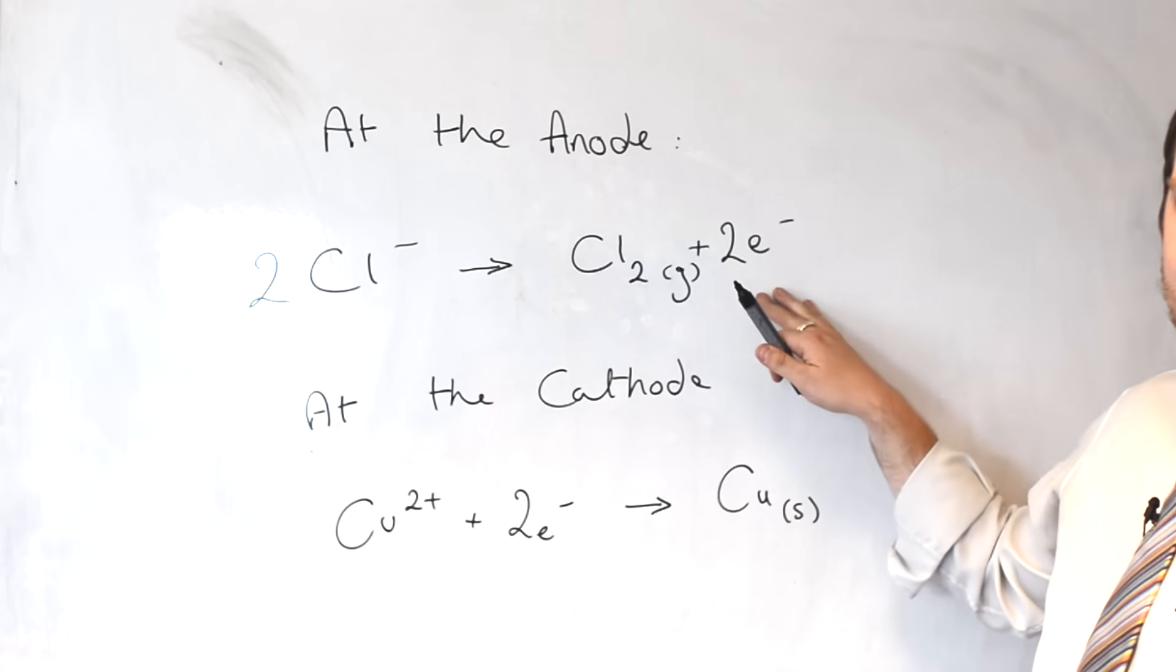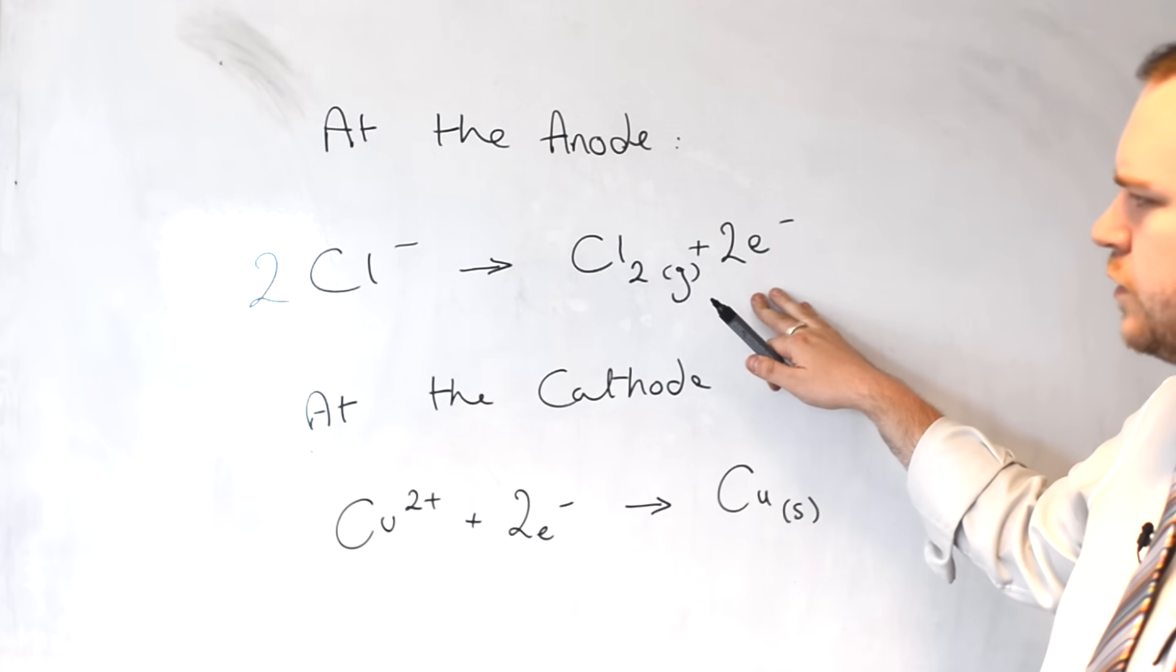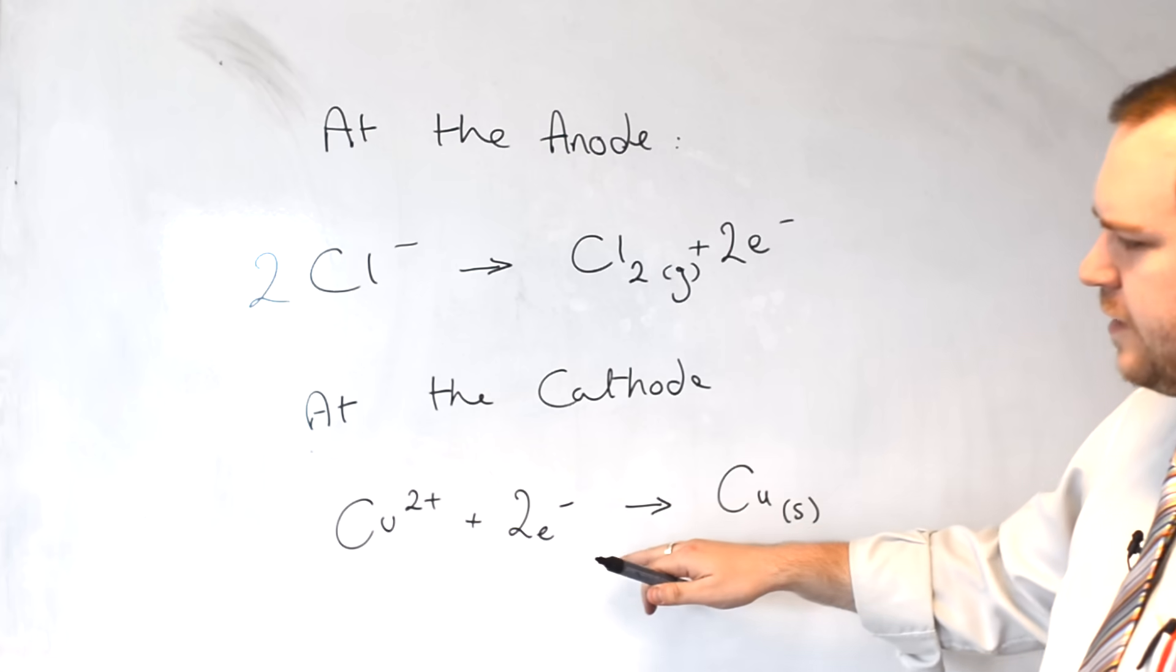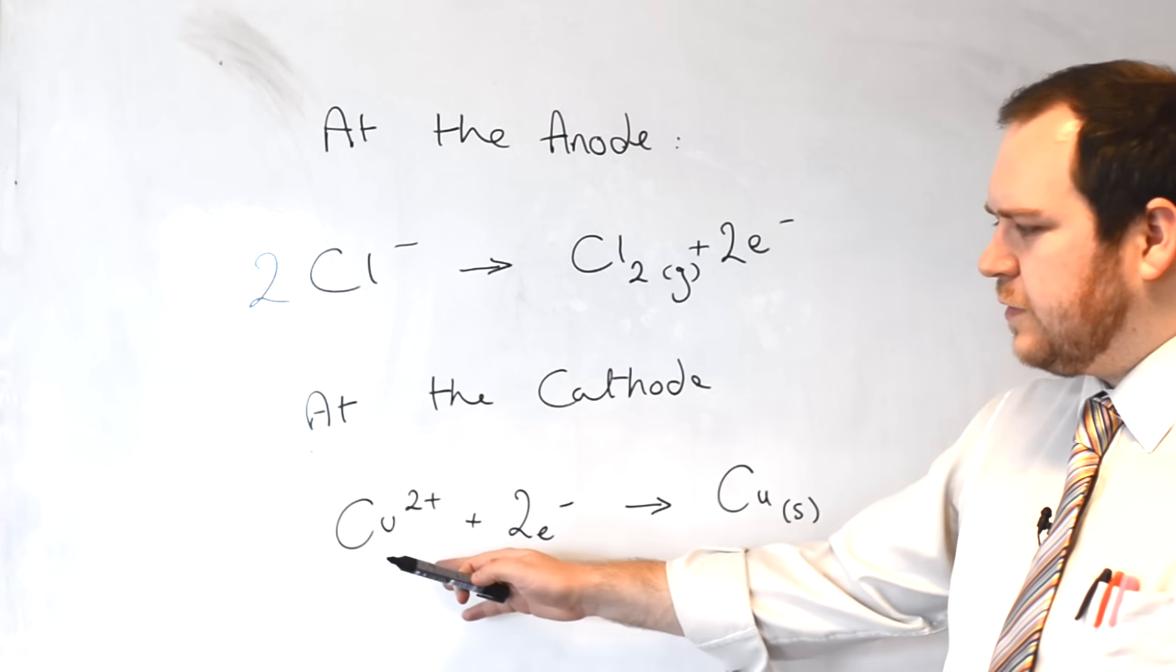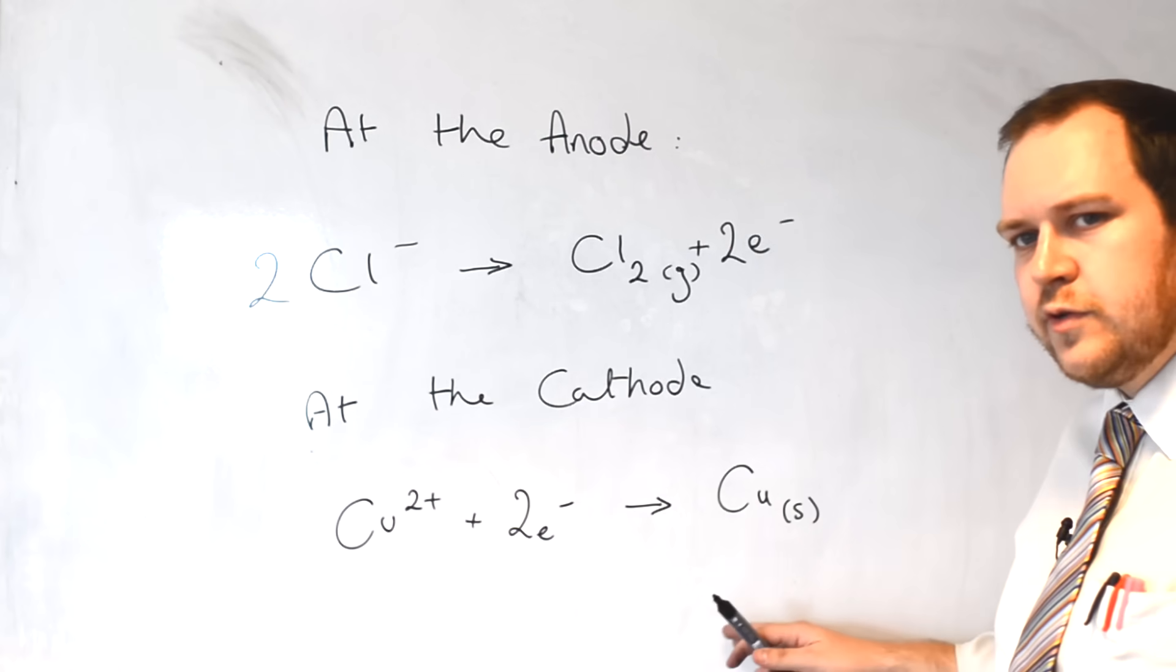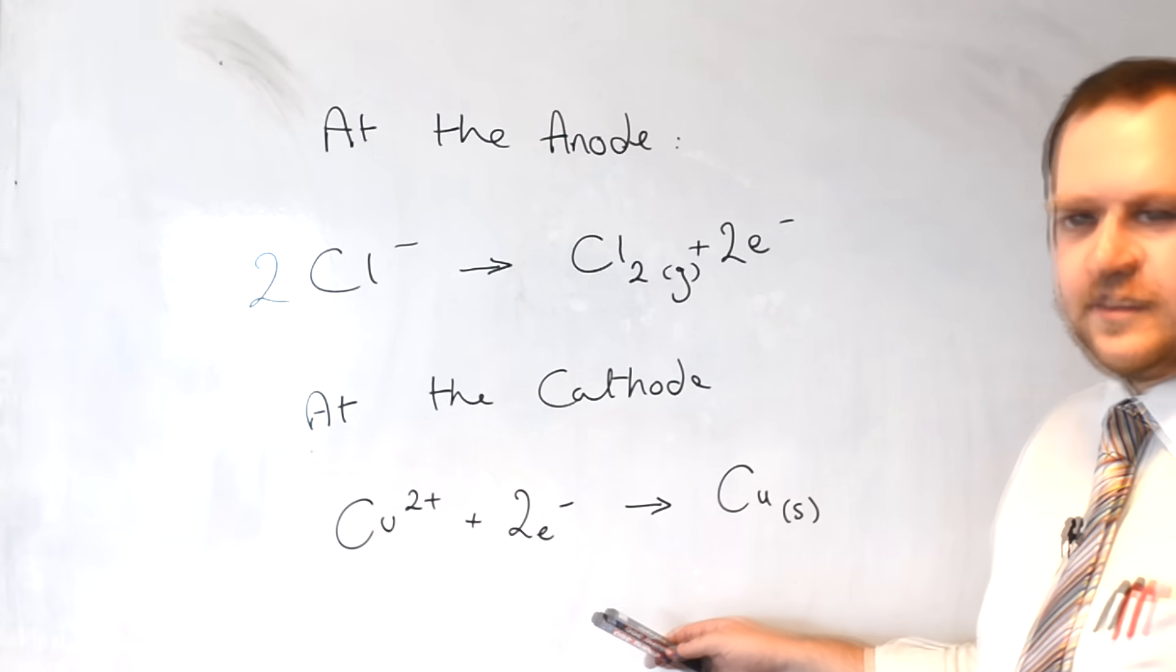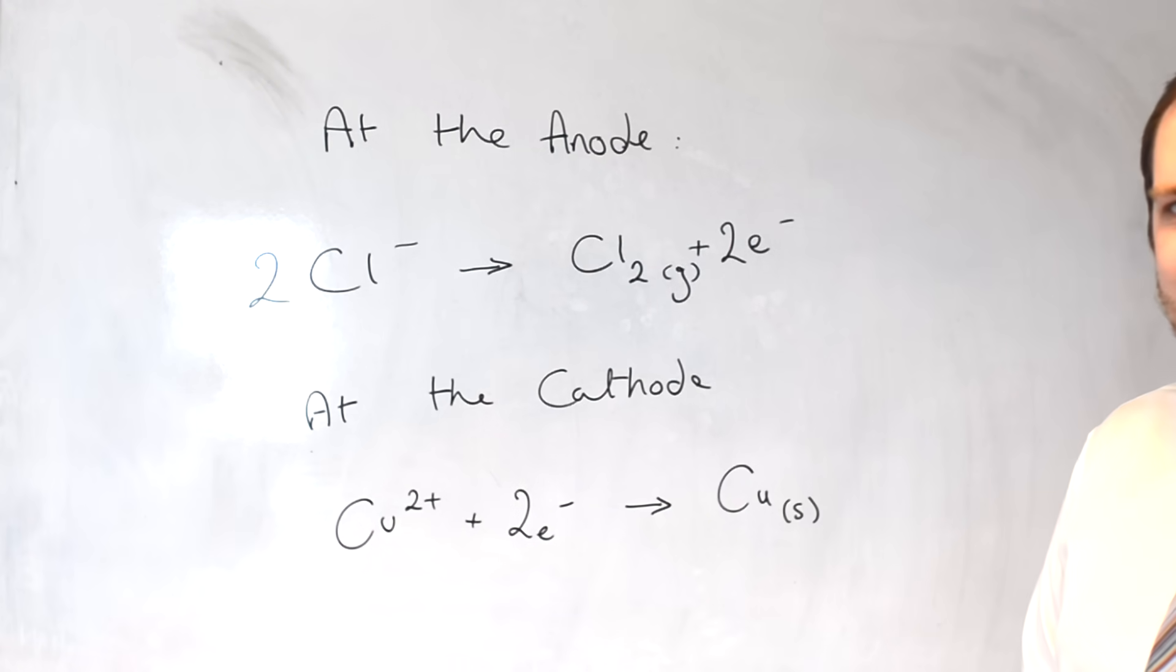At the anode, where electrons are lost, the chloride ions are oxidized to chlorine gas. At the cathode, where they gain electrons, we have a reduction. Copper ions are reduced to copper metal. These are called half equations. They show what happens at each electrode.